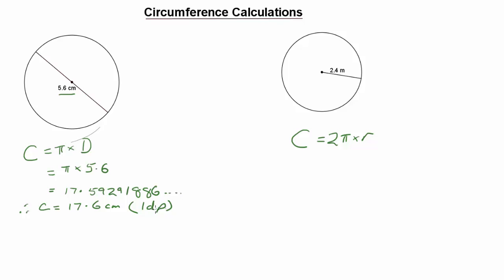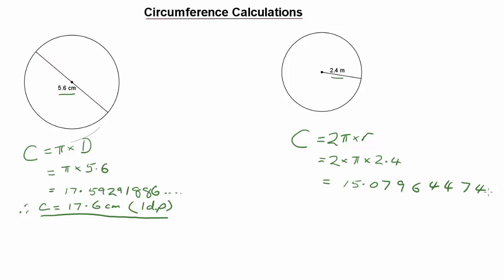It's very important that we indicate the precision of our rounding and underline your answer. The second circle has a radius of 2.4 metres. If we've got the radius, the circumference equals 2 pi times the radius, so we substitute 2.4: 2 times pi times 2.4. Putting that into the calculator gives us 15.07964474, which rounds to 15.1 metres correct to 1 decimal place.